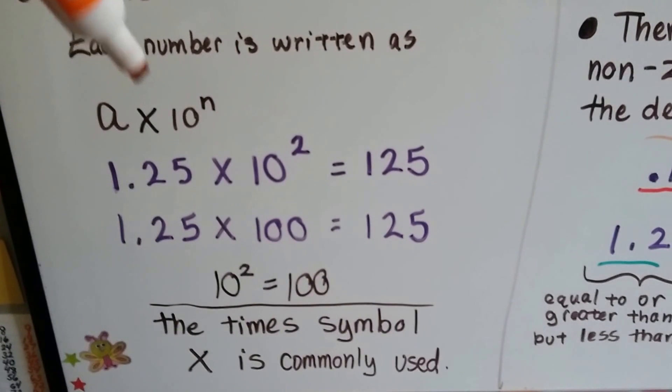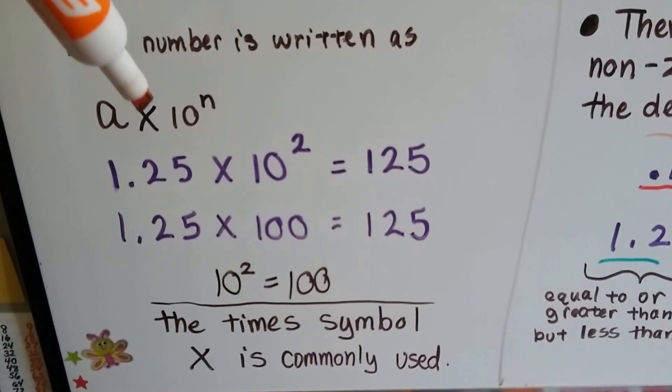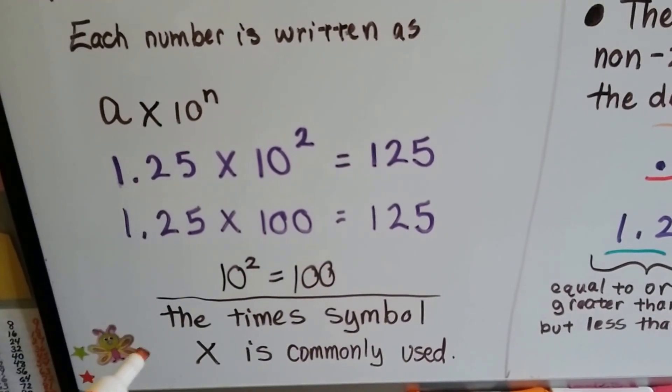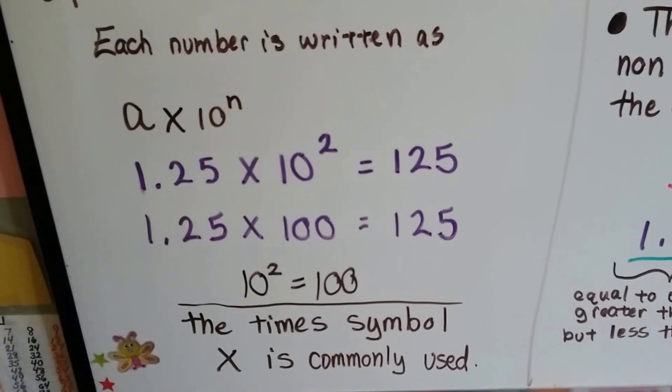We use this big X, that's not a variable, that's the times symbol that we used in second or third grade. We use this big X in scientific notation to say times 10 to that power.